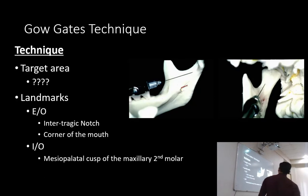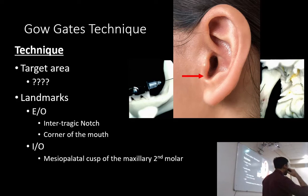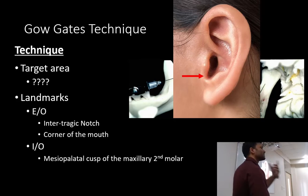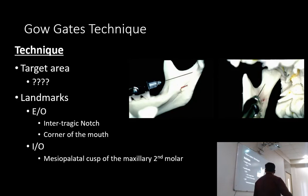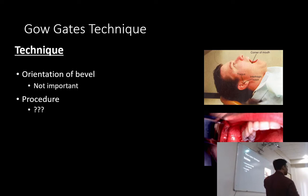The target site is the anterior portion of the condylar neck. Extra-oral landmarks: the intertragic notch and the corner of the mouth — we draw an imaginary line between these. Intraorally, we use the mesiopalatal cusp of the upper second molar to ascertain the height at which we insert the needle. Because we are approaching the condylar neck at almost 90 degrees, we can disregard the direction of the bevel.